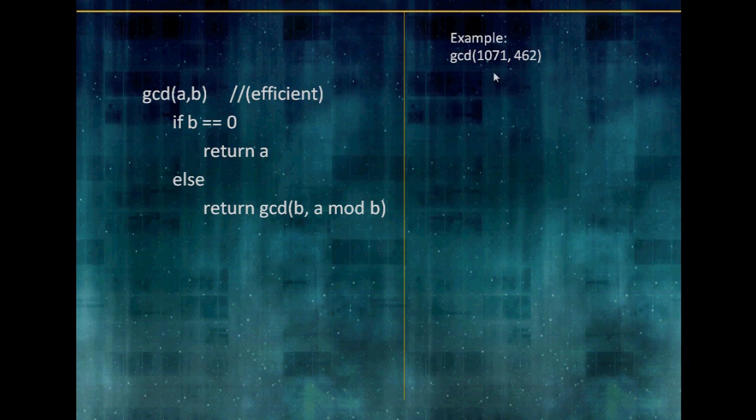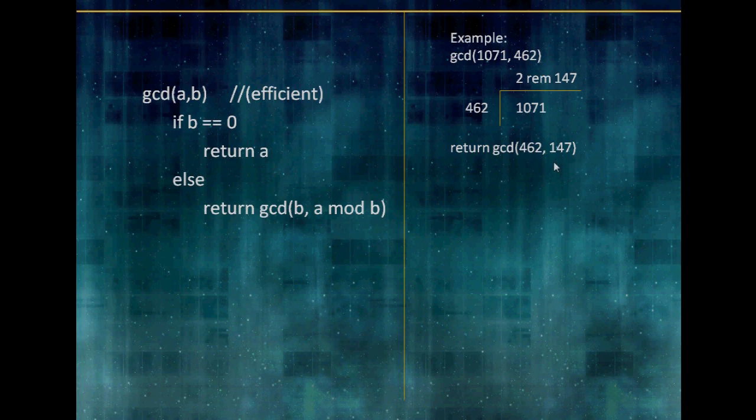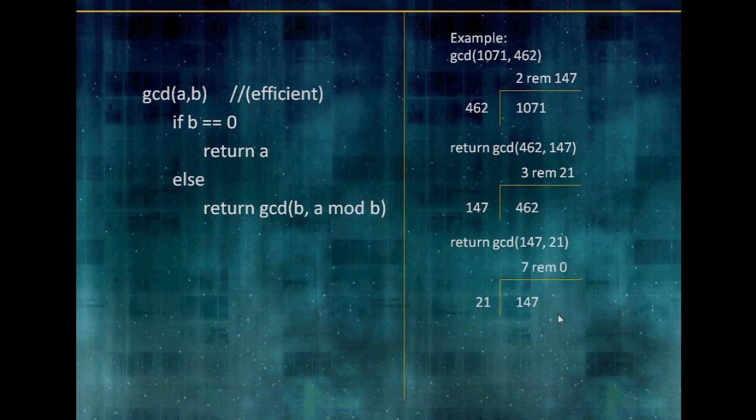So here it is: 1071 and 462. We divide 462 into 1071, we get 2 with a remainder of 147. So now our remainder is going to be our new B, and 462 is our new A. We do the same thing, divide 462 by 147, 3 with a remainder of 21. So 21, our new B, 147 is our new A. Do it again: 21 goes into 147, 7 times with a remainder of 0. The remainders are B. Now we have B equals 0, so we return A. 21 is the GCD of 1071 and 462.